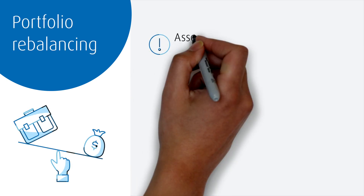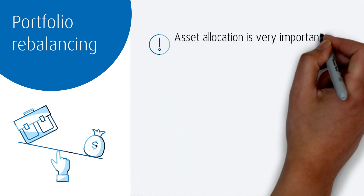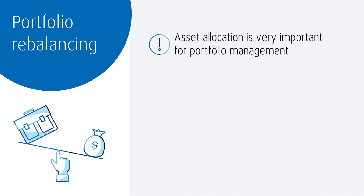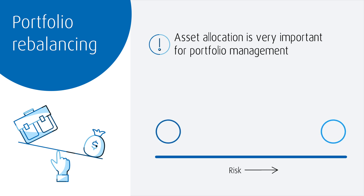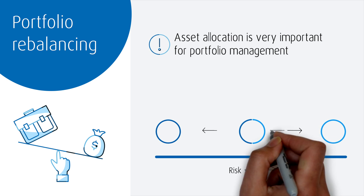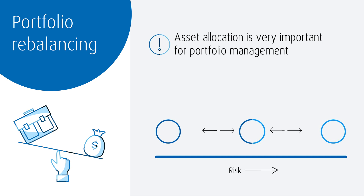An investor's overall asset allocation is one of the most important considerations when setting up and maintaining a portfolio. The ratio of asset classes like equities and fixed income will largely determine the overall risk level. But because individual investments and asset classes have their own investment performance patterns, the original asset allocation can drift away from your original ratios. Portfolio rebalancing is the process of bringing your portfolio's asset allocation back to your initial target allocation.